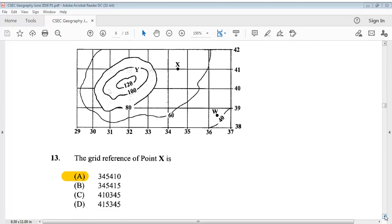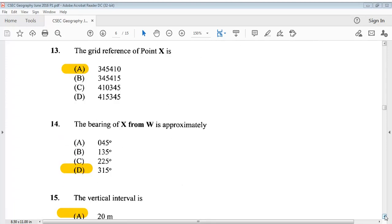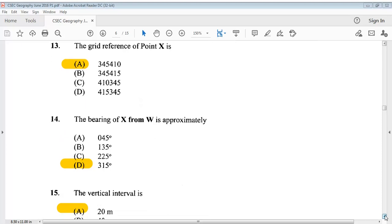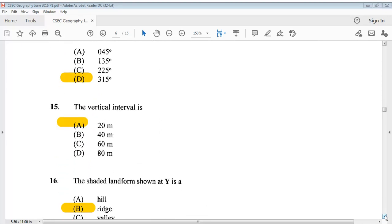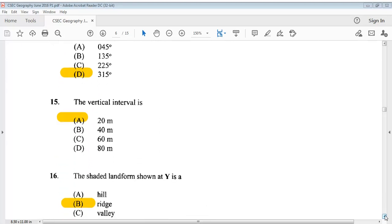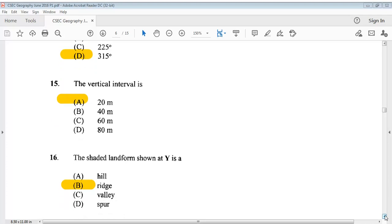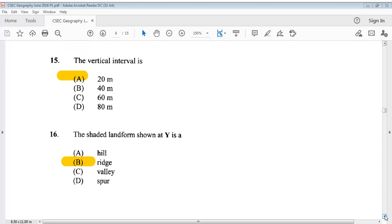Question 14: The bearing of X from W is approximately? The answer is D, 315 degrees. Question 15 says, the vertical interval is A, 20 meters. Question 16, the shaded landform shown at Y is? That's B, ridge.